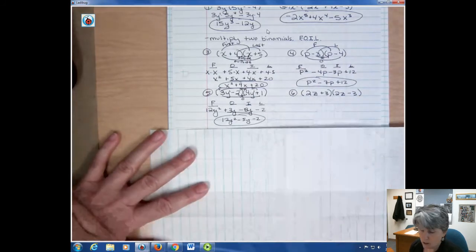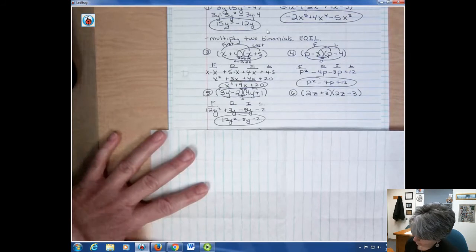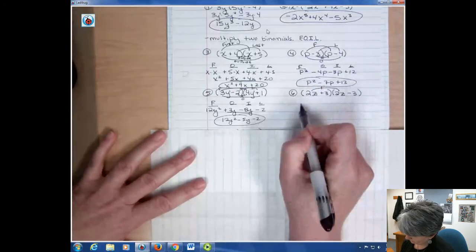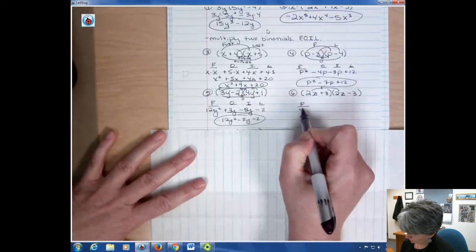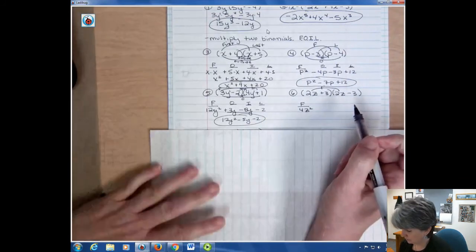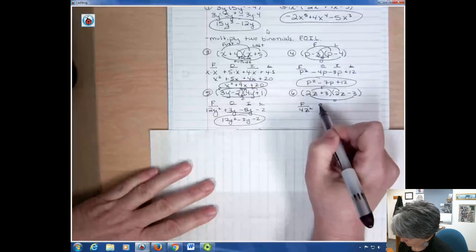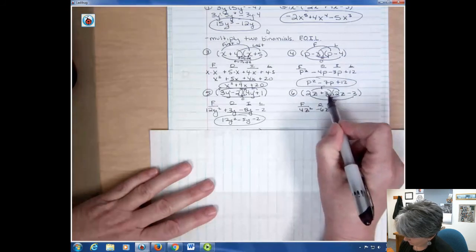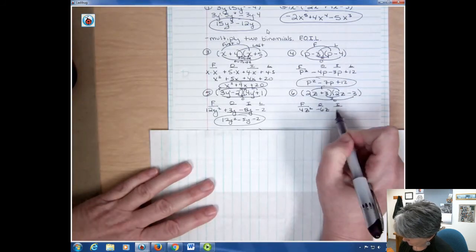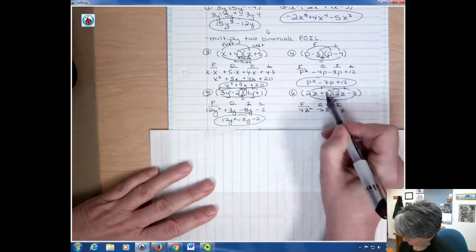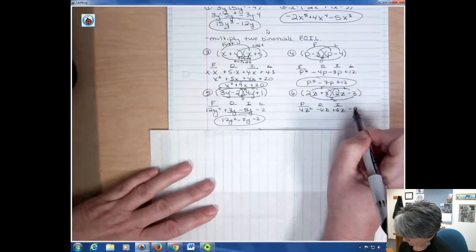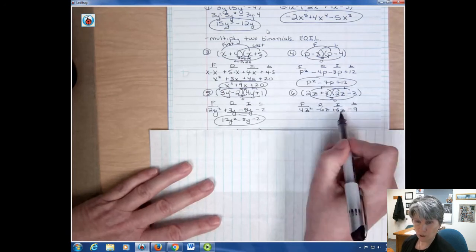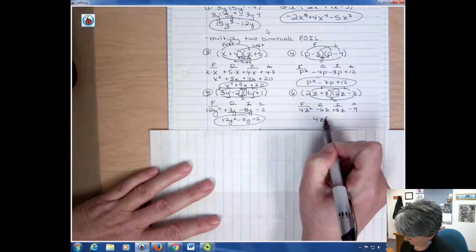You can try this one on your own and pause it or you can not. But here what's happening is we have the first term 2z times 2z, and that's going to be 4z squared. There always should be getting the z squared there, so please try to remember that. Outside, we have 2z times negative 3, which is negative 6z. Inside, we have 3 times 2, which is positive 6z. And last, we have 3 times negative 3, which is negative 9. And if I combine up the like terms, my like terms drop out completely here and I just have 4z squared minus 9.